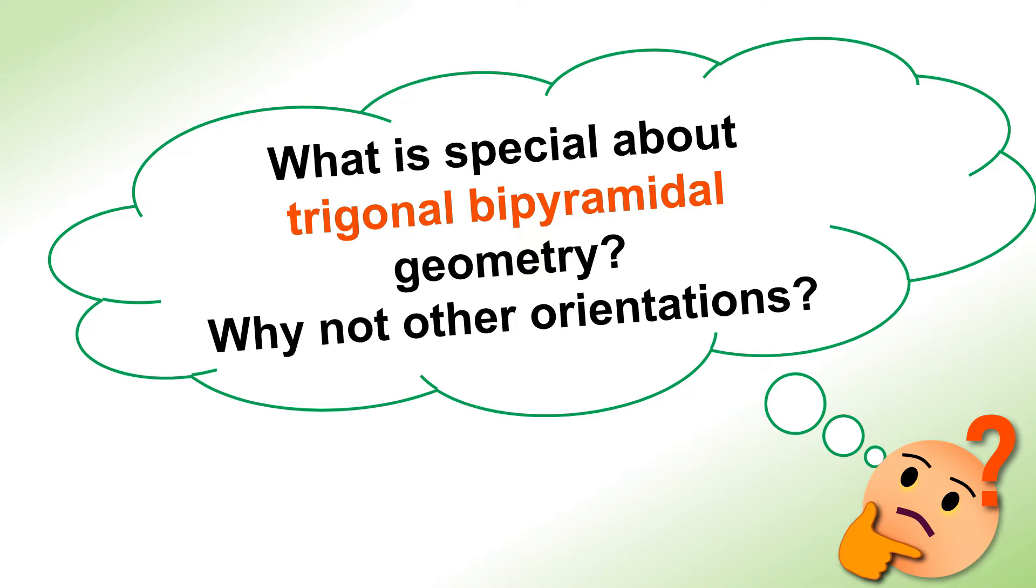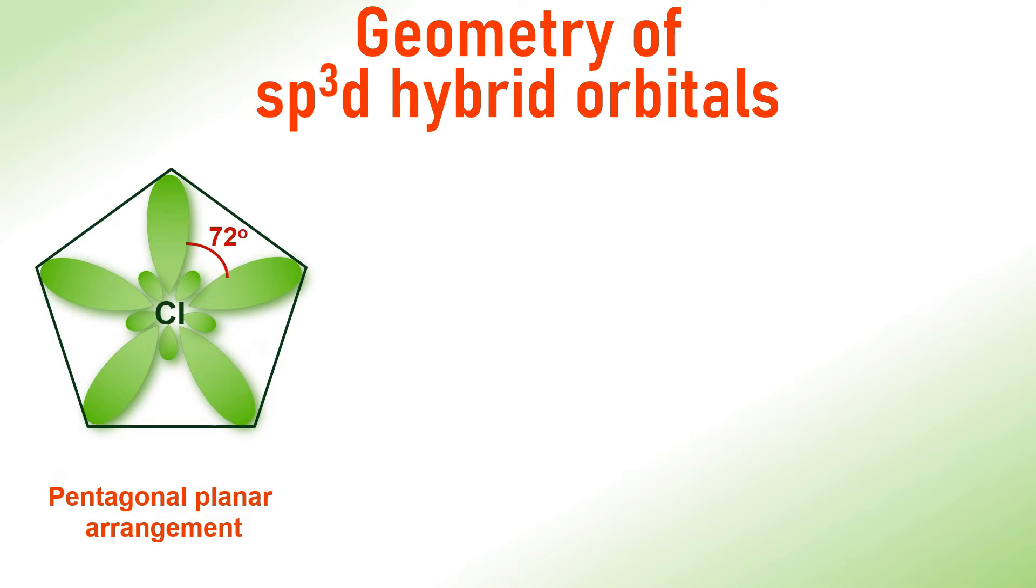Now one more question. What is special about trigonal bipyramidal geometry? Why not other orientations are possible? Yes, there are three possible symmetrical arrangements for five orbitals in space.